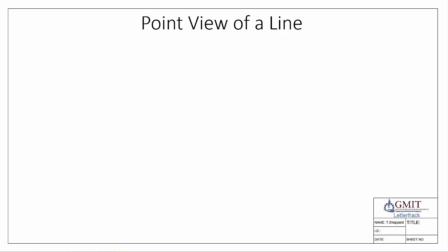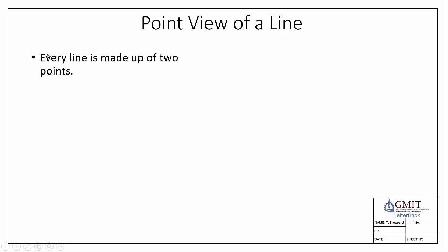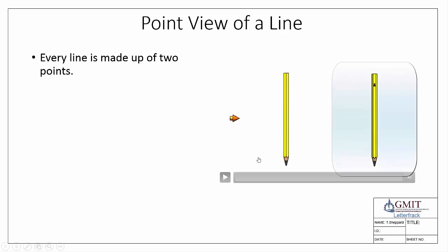We're going to start off by looking at what is the point view of a line and how do we go about finding it. The background is that every line is made up of two points — the definition of a line is the shortest distance between two points. Taking the example of a pencil, the two points are the front of the pencil and the back of the pencil.